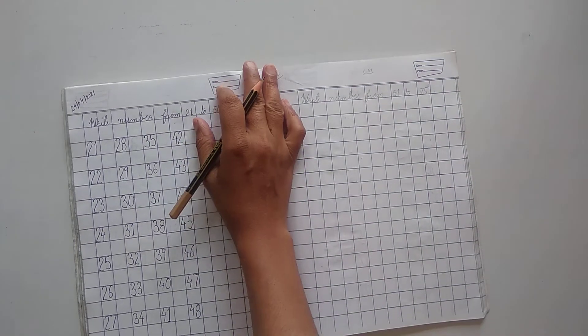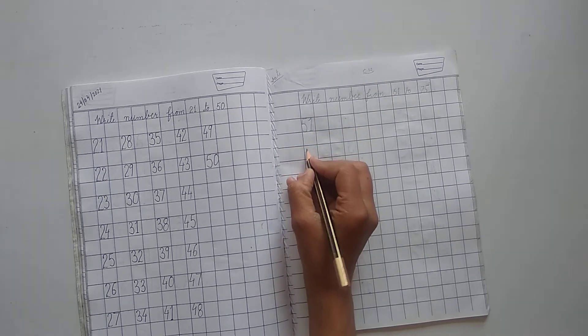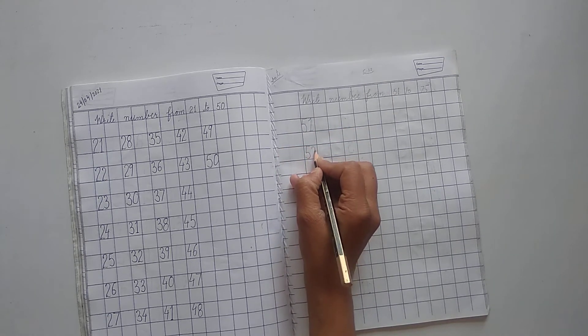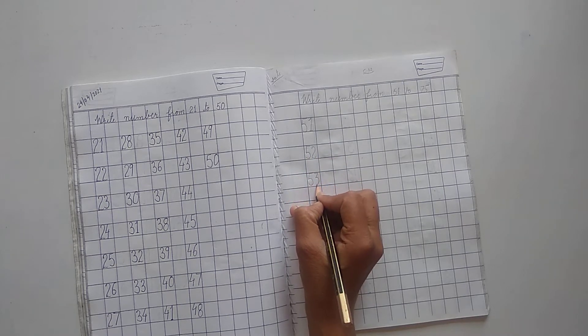Write number from 51 to 75. Okay. So, let's start. 51, 52, 53.